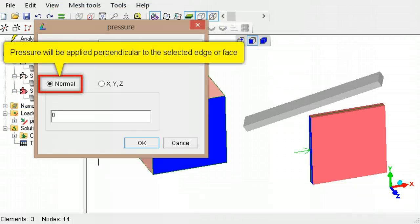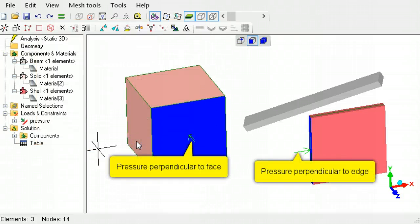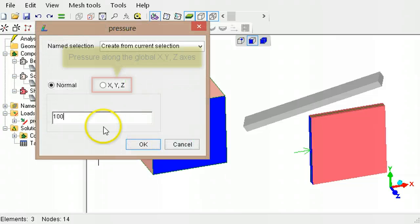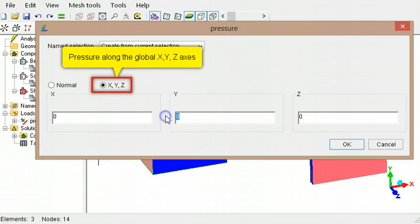Pressures can be applied in one of two ways: either perpendicular to the selected edge or face, or they can be applied as components along the x, y, and z axis directions.